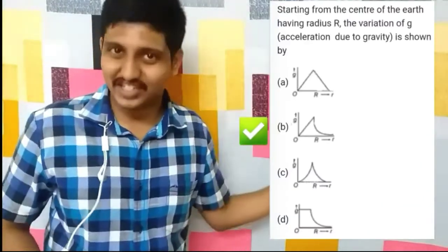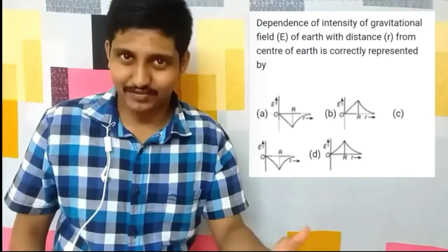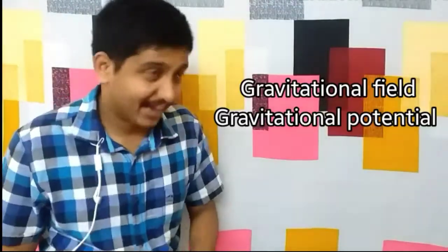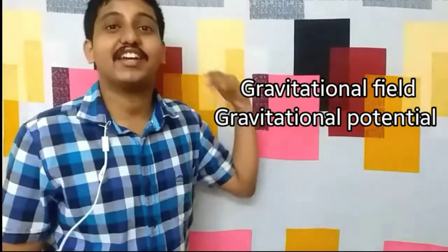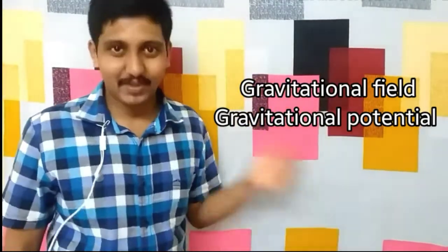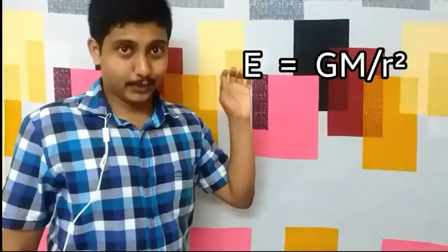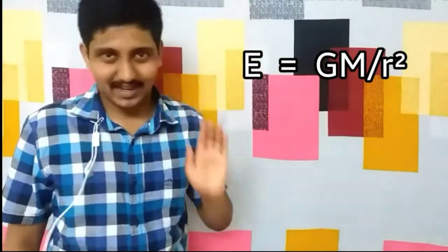The questions don't finish here. There are many other questions based on graphs — regarding gravitational potential, gravitational fields, etc. Let's study how to answer such questions. First, let's take the case of gravitational field. The general formula of gravitational field for any object is E = Gm / r².